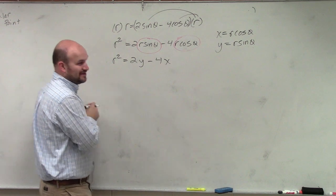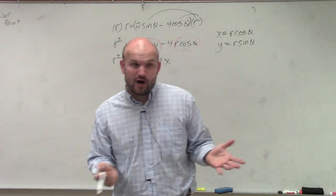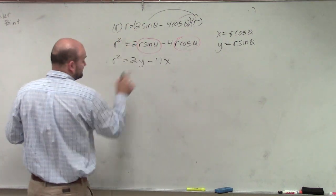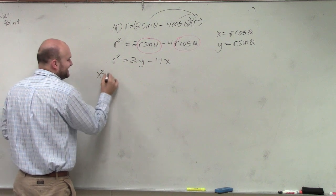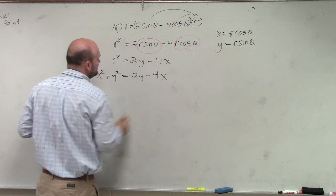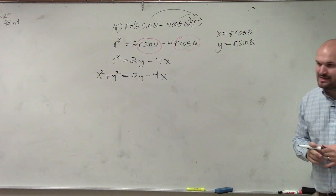Now I've got to get rid of this r, though, right? So I have r squared. Do we have any representation for what r squared represents as far as our conversion? x squared plus y squared is equal to 2y minus 4x.